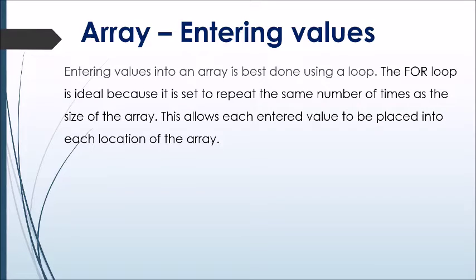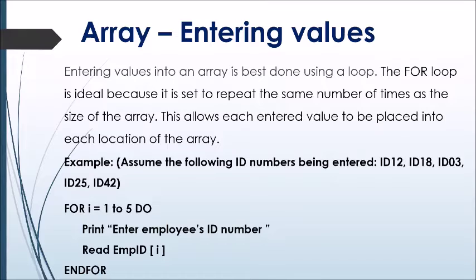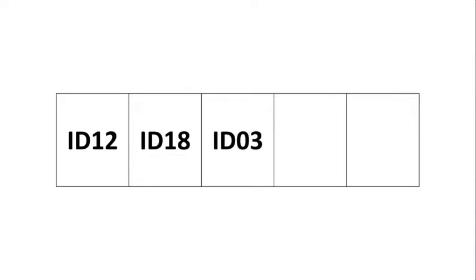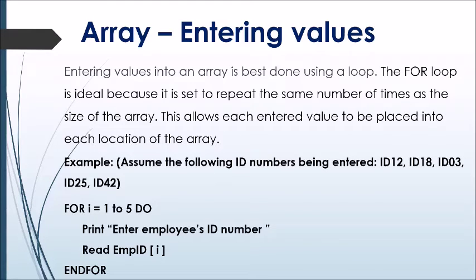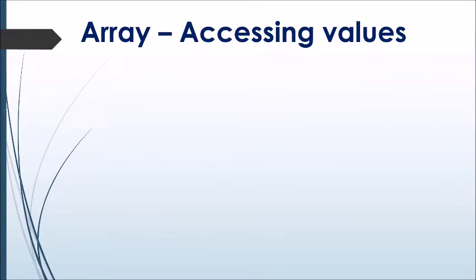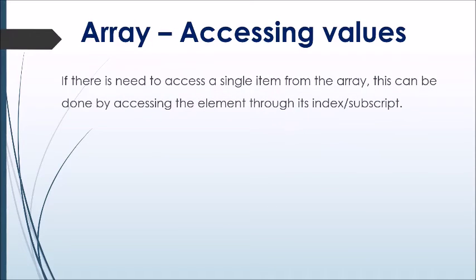Array entering values: entering values into an array is best done using a loop. The for loop is ideal because it is set to repeat the same number of times as the size of the array, allowing each entered value to be placed into each location. The following example shows a for loop with counter variable i. Each time the loop executes, the user is prompted to enter an employee's ID, and a read statement accepts and stores the entered value into the specified array location. The counter variable i acts as the index. Once all five entries are made, the keyword 'end for' terminates the loop.